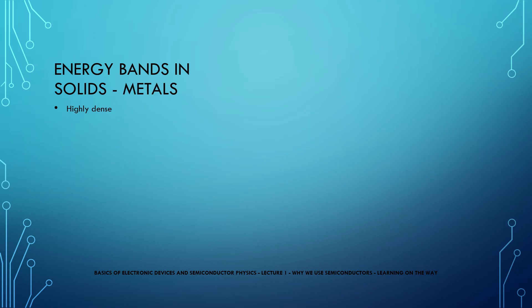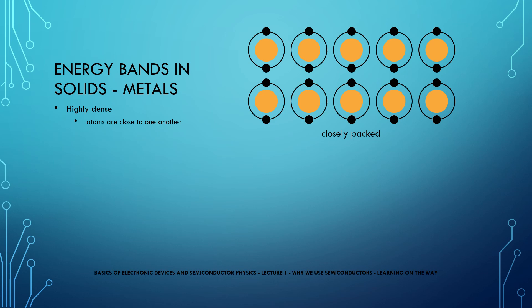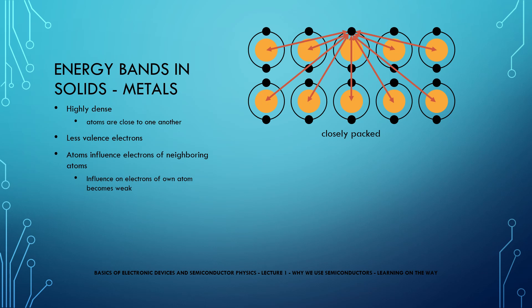Because of the high density of metals, atoms inside metals are very close to one another and have very few valence electrons. Because of densely packed conductors, many atoms influence the electrons of neighboring atoms and the influence of the nucleus on valence electrons becomes weak. For this reason, the energy required to make the electron flow is negligible.